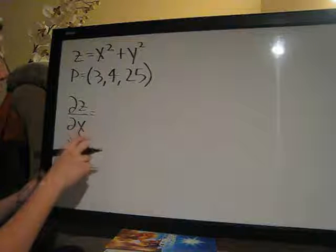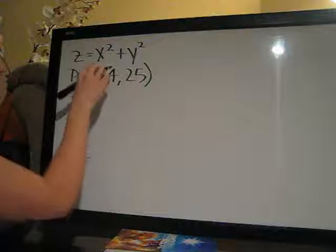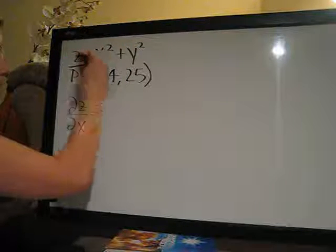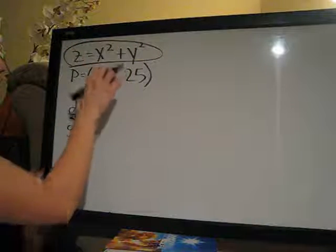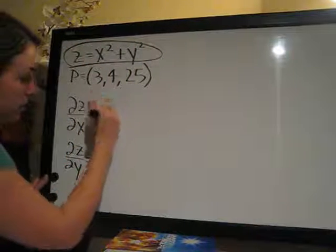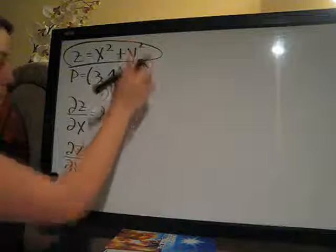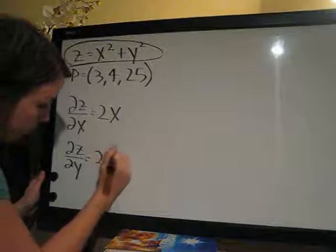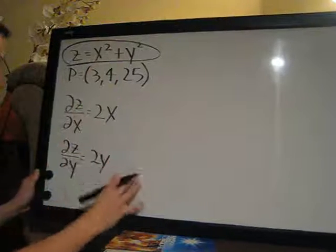So, partial derivatives. First, we're taking with respect to X, and the derivative of this equation here with respect to X is 2X. The Y squared goes away. With respect to Y, it's 2Y because the X squared goes away.